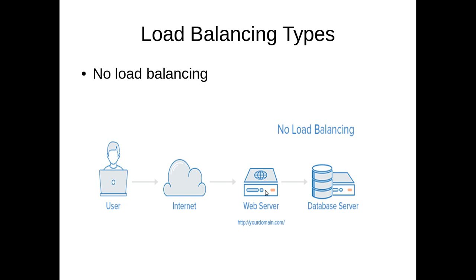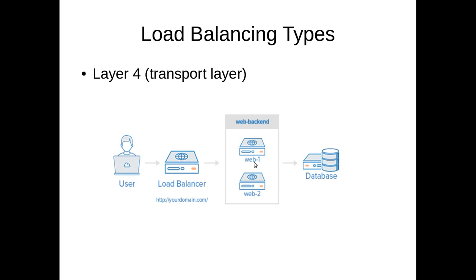What you want to do instead is have two web servers that are identical — they provide the same kind of service. You place a load balancer in front of them. The user accesses the load balancer, and the load balancer decides which web server is up and sends the client request to that server. If you have one thousand users, two servers may be enough; if you have one million users, you start adding more — up to tens of thousands of servers to provide fast service.